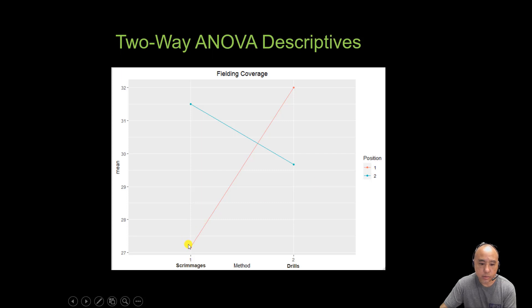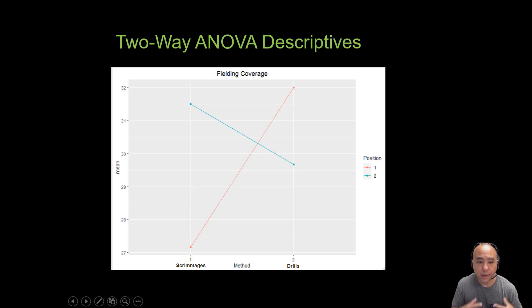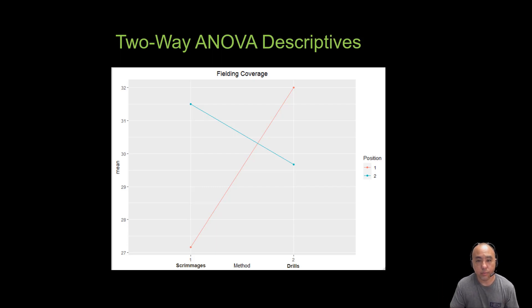Looking at the plot lines, the red line represents pitchers and the blue line represents position players. As mentioned, pitchers perform better in fielding coverage when using drills as opposed to scrimmages, while the opposite is true for position players, who perform better using scrimmages compared to drills. These plot lines are informative but only describe the sample. To extend this result to the population, we have to perform a two-way ANOVA in RStudio.